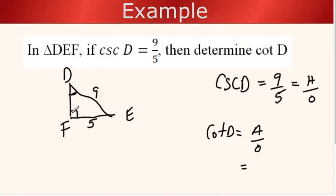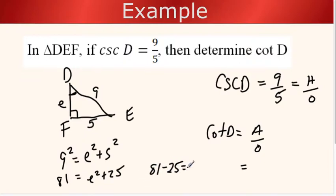Let's use Pythagorean theorem. Let's call this little E over here. We've got 9 squared equals E squared plus 5 squared. That's 81 equals E squared plus 25. If you subtract these, we've got 81 subtract 25, that's going to be E squared.